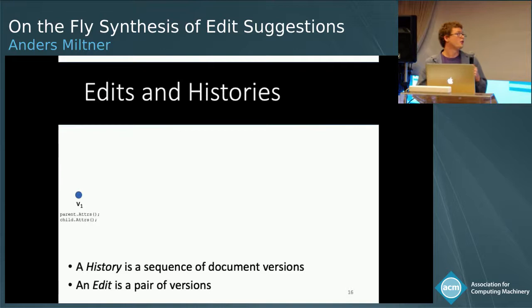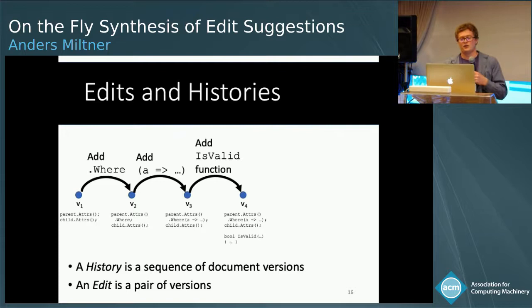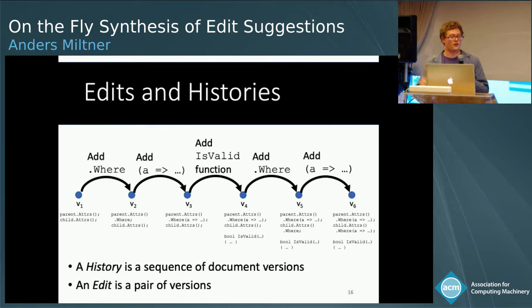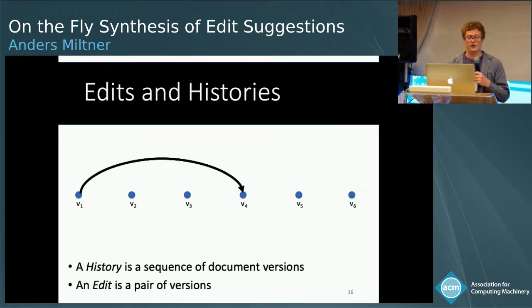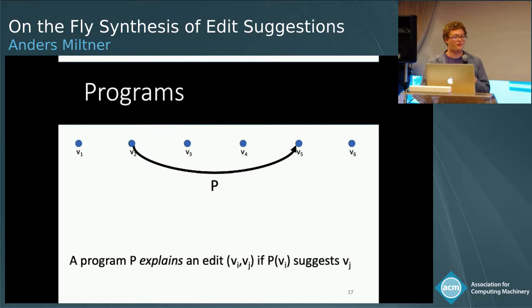Let's do some formalization. First, we define a history — a sequence of document versions. As you are coding, we keep track of document snapshots. We start with V1, the initial code, then you might add '.where' to get V2, add the lambda, add is_valid, and every time you make a change it adds another node onto this graph. An edit is a pair of versions — for example, V1 to V4 — going from the earlier version to the later one. Programs are a special type of suggestion program.